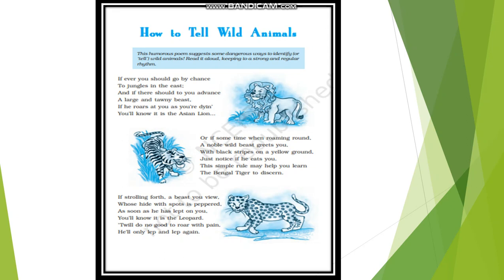Now let us read the poem first. 'If ever you should go by chance to jungles in the east, and if there should to you advance a large and tawny beast. If he roars at you as you are dying, you will know it is the Asian lion. Or if sometime when roaming round, a noble wild beast greets you, with black stripes on a yellow ground, just notice if he eats you. This simple rule may help you learn the Bengal tiger to discern.'